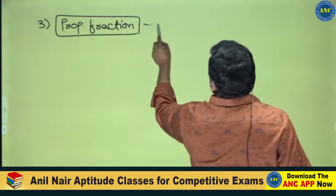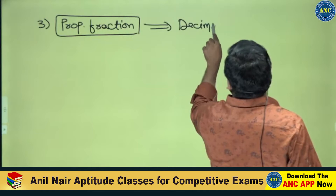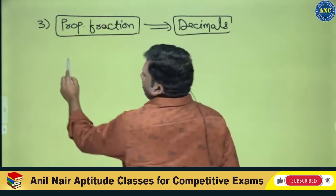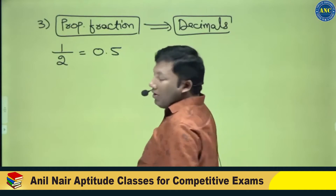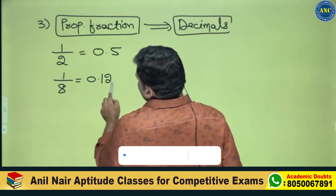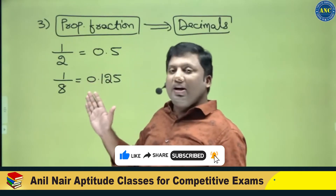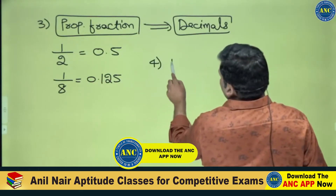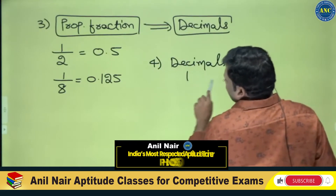Third key point: every fraction can be converted into decimals. For example, 1 by 2 equals 0.5, and 1 by 8 equals 0.125. Just as fractions have proper and improper types, in decimals also there are different kinds.